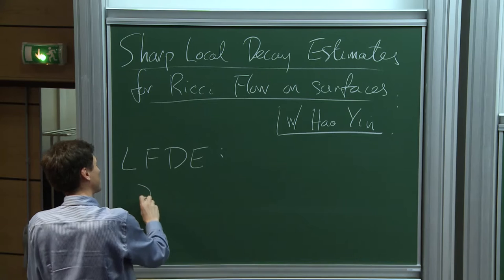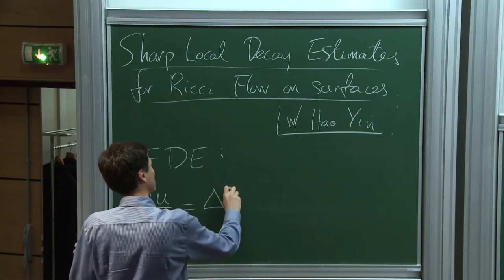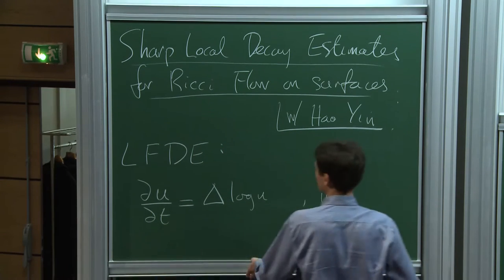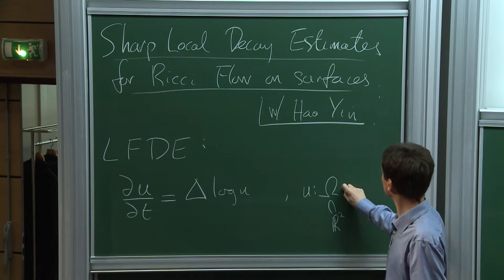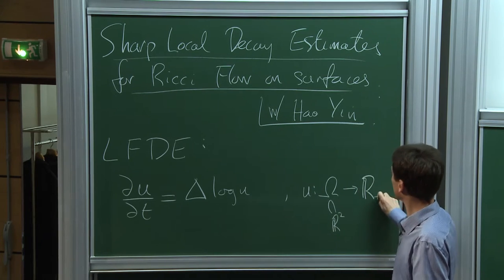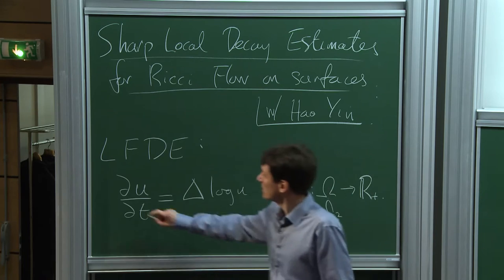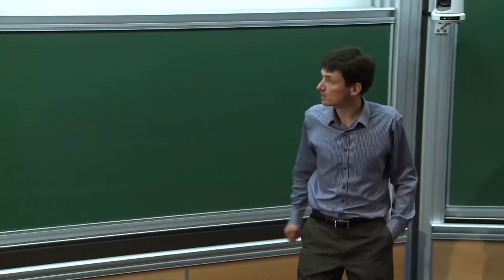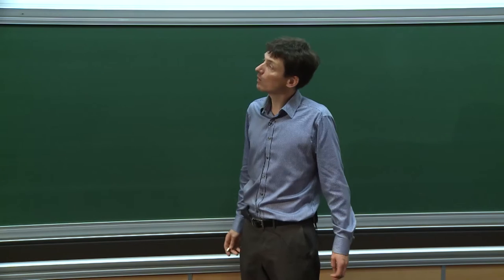This is simply the equation du/dt = Δ(log u). This is for positive functions on some domain in R². This is a very heavily studied equation with very elegant properties. The reason for all these nice properties is that the equation is very closely linked to the Ricci flow equation.